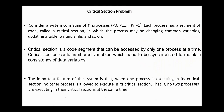Consider a system consisting of N processes P0 through PN-1. Each process has a segment of code called the critical section, in which the process may be changing common variables, updating a table, writing a file, and so on. We are considering here only cooperating processes. For independent processes, we do not need any kind of synchronization.